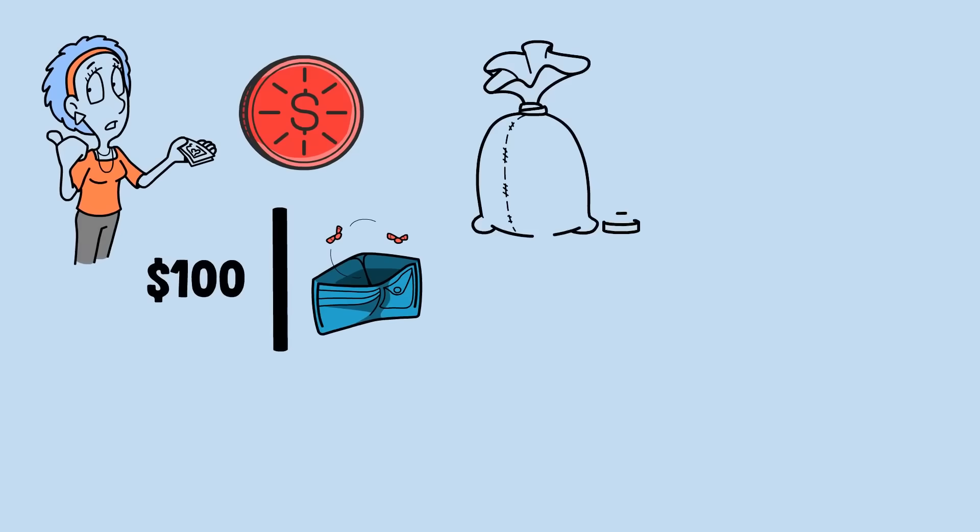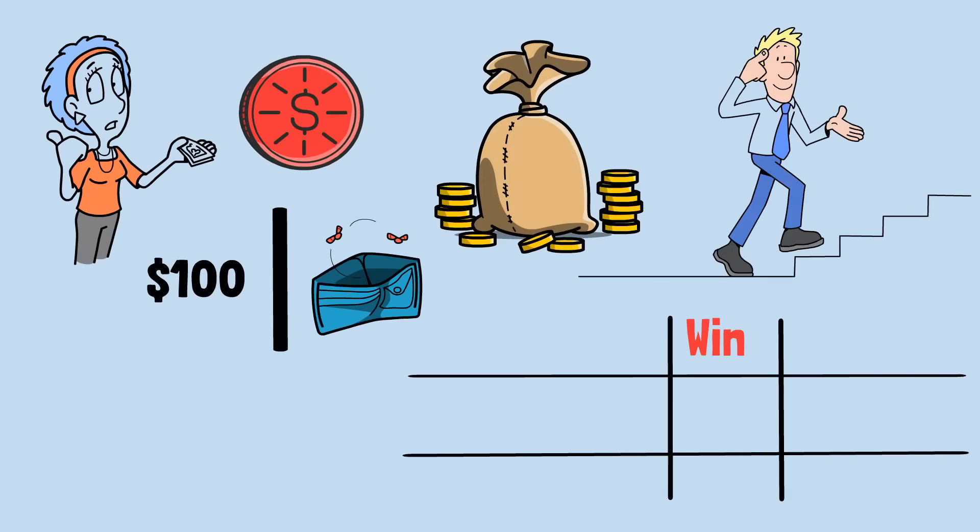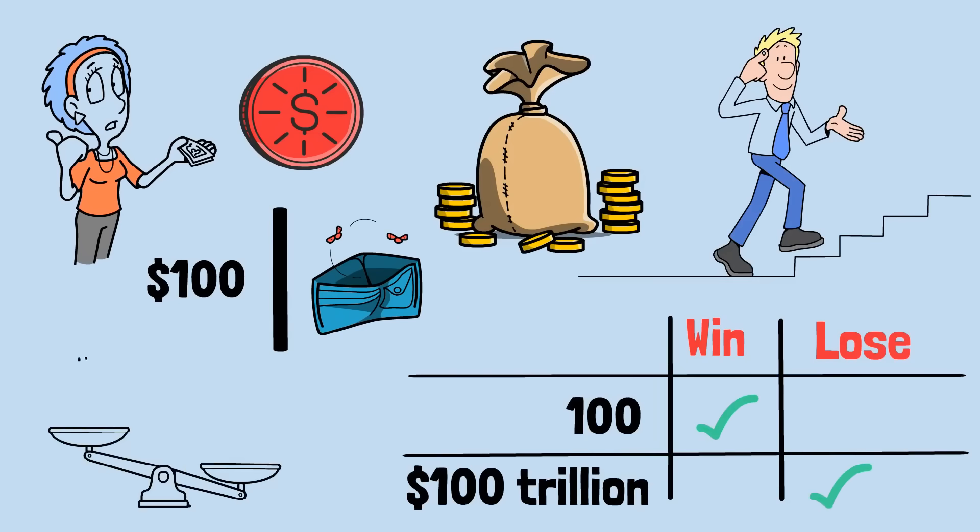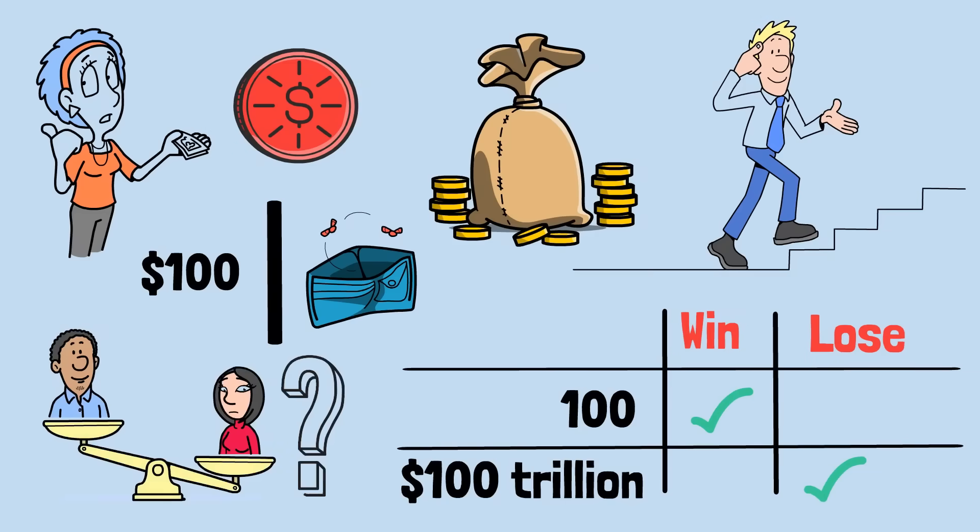With such an enormous bankroll, Carlos has virtually unlimited opportunities to recover from losses. He needs 100 more wins than losses before accumulating 100 trillion more losses than wins. Intuitively, his chances of success should be astronomically higher than Alice's, shouldn't they?